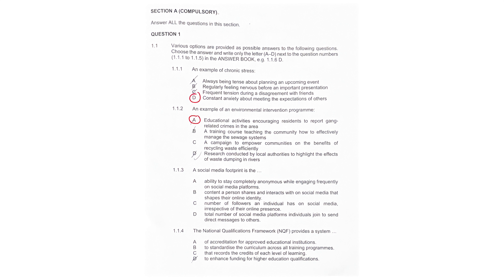1.1.3, a social media footprint — it's going to be B. It was the content that a person shares and interacts with on social media. 1.1.4, the national qualification framework, NQF — it was all about recording credits of each level of learning. The answer here was going to be C. When in doubt, put C, but only for 1.1.4. That would have worked.